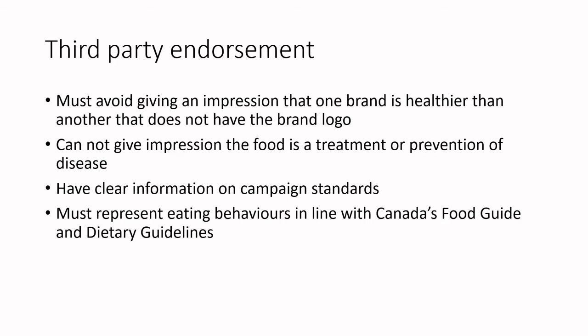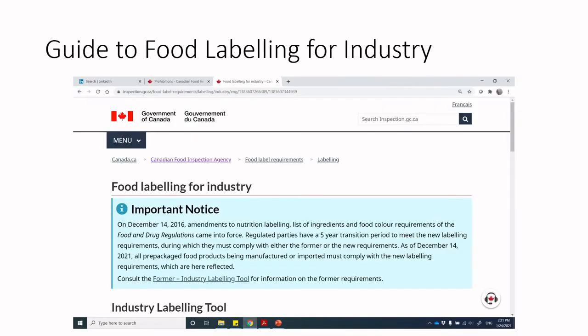You cannot give any impression that the food is a treatment or prevention of disease. There must be clear information about what the certification standard means — you can't randomly invent vague symbols implying a new certification. It must be absolutely clear to consumers what the mark means. Any third-party endorsement must align with eating behaviors that comply with Canada's Food Guide and dietary guidelines — so you wouldn't see a sugar board endorsing a product full of sugar, since Canada's Food Guide recommends reducing sugar consumption.